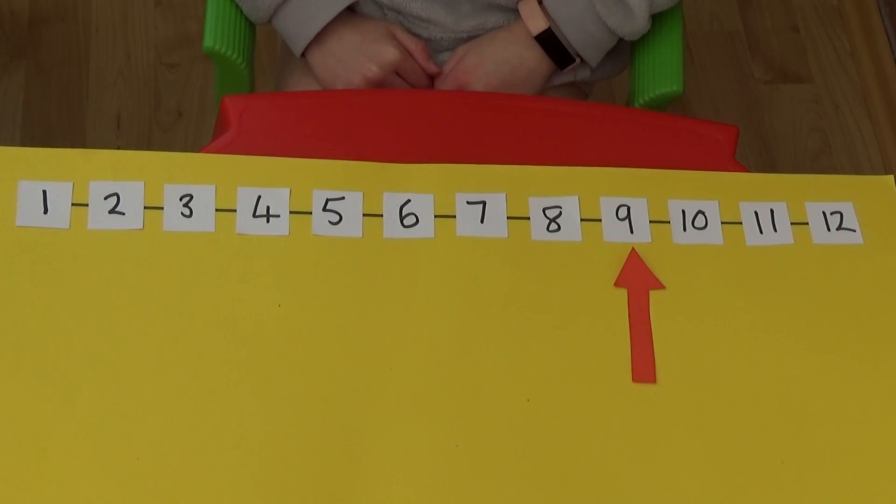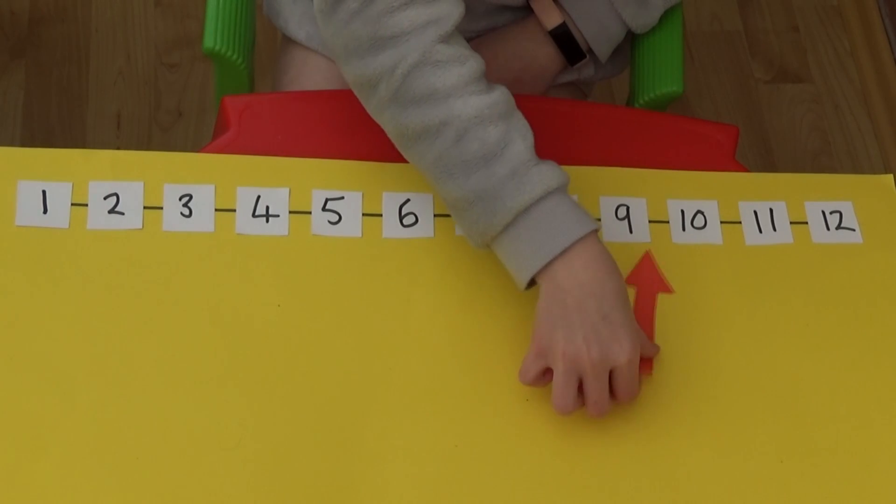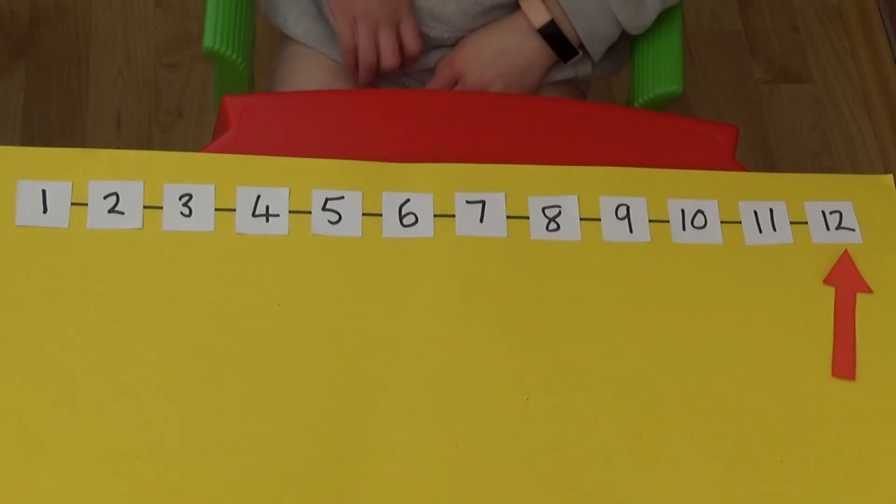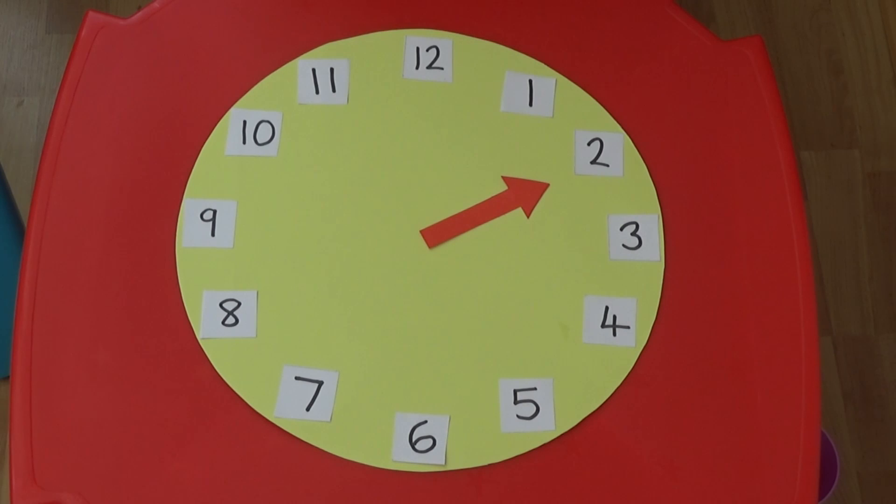Once the arrow reaches 12 o'clock, it doesn't then carry on to 13, it goes back to 1. This is why our clock needs to be round and not on a straight line. If we look at the hours in a circle we can see how reading the hour hand through a circle is no different to reading a straight number line.